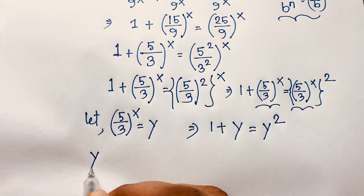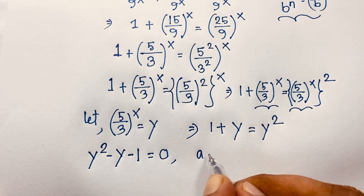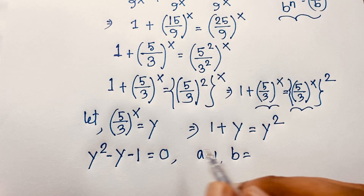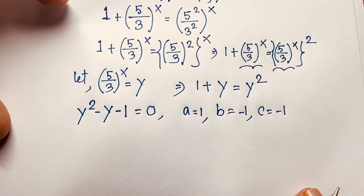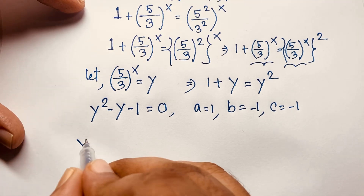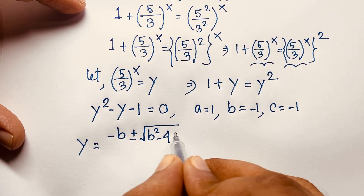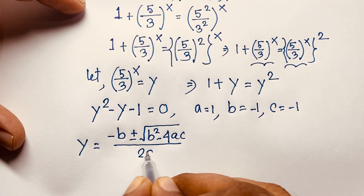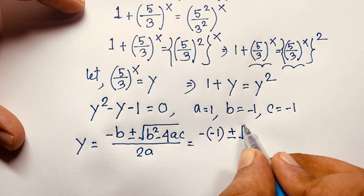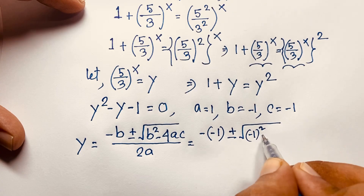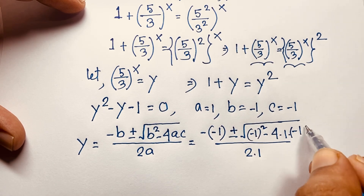This equation is y². If I move y to this side, it will be y² − y − 1 = 0. Now here, a = 1, b = −1, and c = −1. According to the quadratic formula, y = (−b ± √(b² − 4ac)) / 2a.